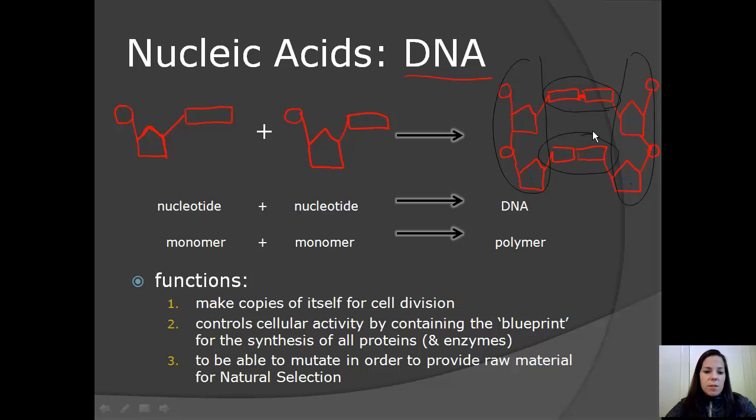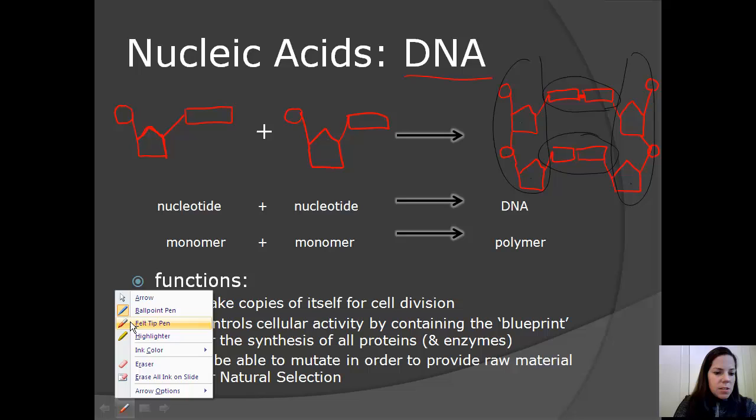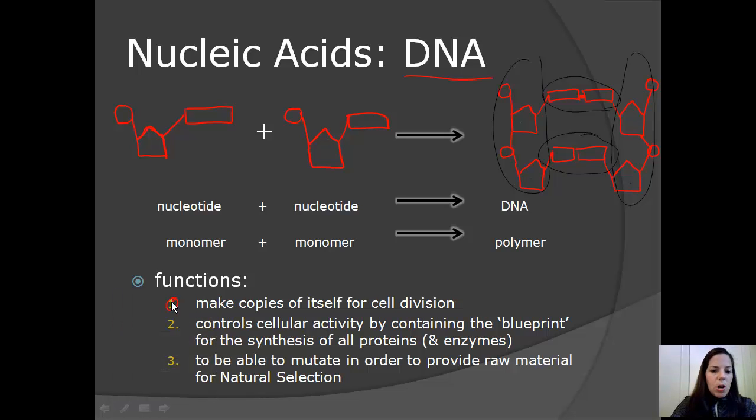So what are the functions of DNA? The functions of DNA are to number one, make copies of itself for cell division. So one cell becomes two cells. The body uses this function for growing and creating more muscle mass. Number two, controls cellular activity by containing the blueprint for synthesis of all proteins and enzymes within the cell. And number three, it is able to mutate in order to provide raw material for natural selection in order for evolution to occur.